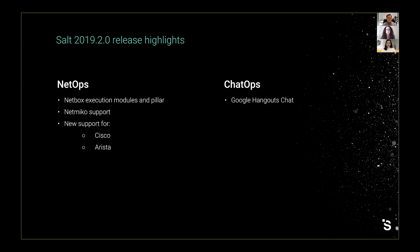We've also added support for a couple of new switches. The Cisco switch was previously supported via SSH methods, but it is now supported via the NX API. There is also now support for Arista switches via a proxy module as well. In terms of ChatOps, there is the Google Hangouts module, and you can now use the execution module to interact with Google Hangouts. Back to you, Tom, to speak to a customer case story.